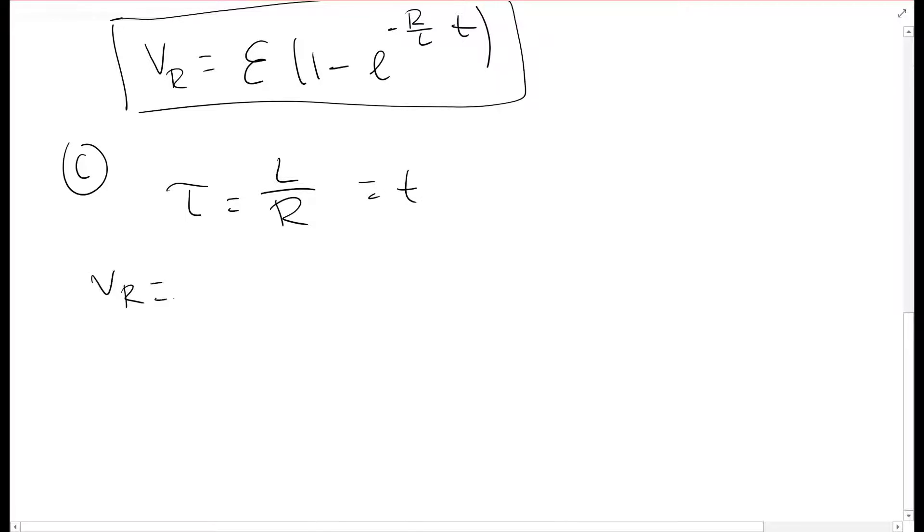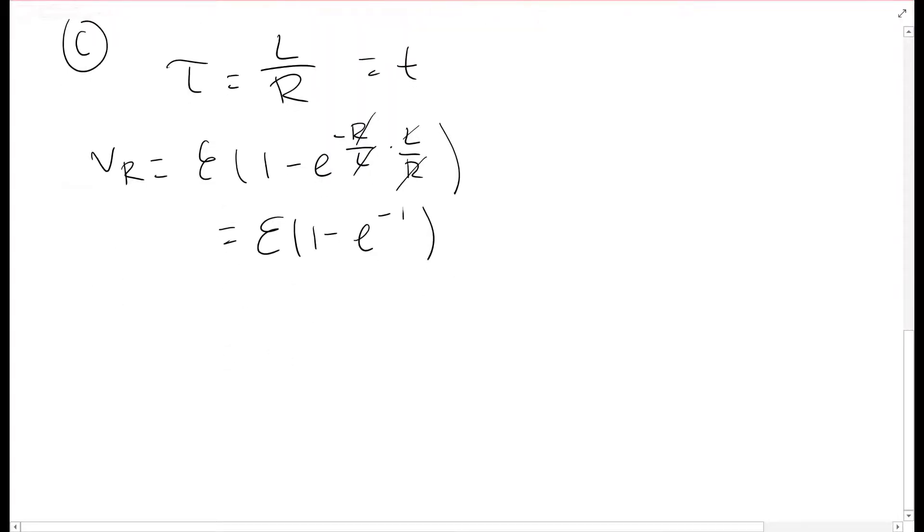So Vr equals Emf times 1 minus E to the negative RL times T, which is L over R, and what do you know? These beautifully cancel out, and you end up getting that, and we have our voltage.